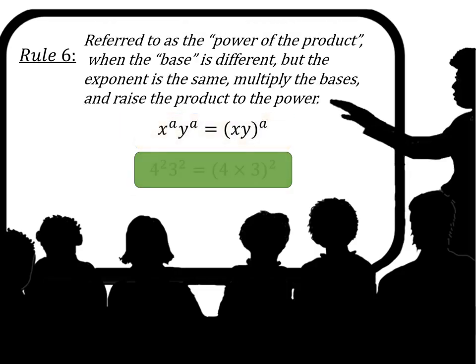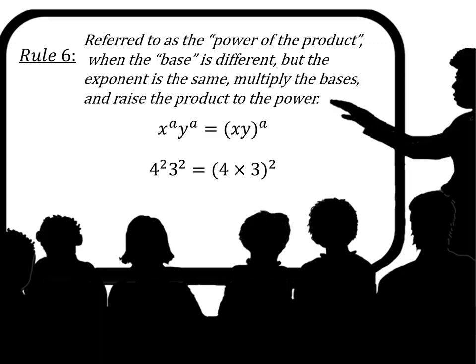Rule 6, often called the power of the product: when the bases are different but the exponent is the same, multiply the bases and raise the product to that power. So x to the a times y to the a equals xy to the a. For example, 4 to the second power times 3 to the second power equals 4 times 3 — which is 12 — to the second power. The bases are different but the exponents are the same.